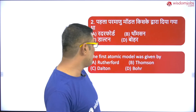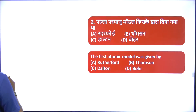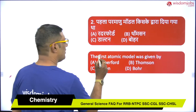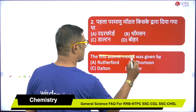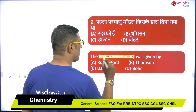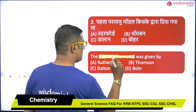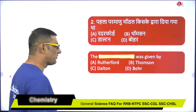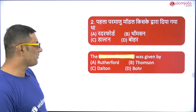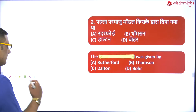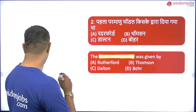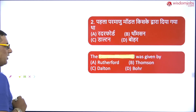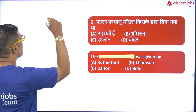The keyword here is 'first atomic model.' In the last video we discussed Dalton, so this is the first atomic model. Now let us discuss what theory was given by Rutherford. Rutherford discovered the nucleus.